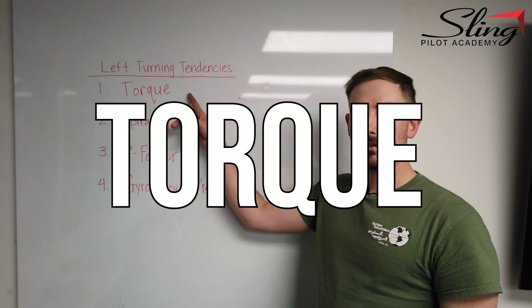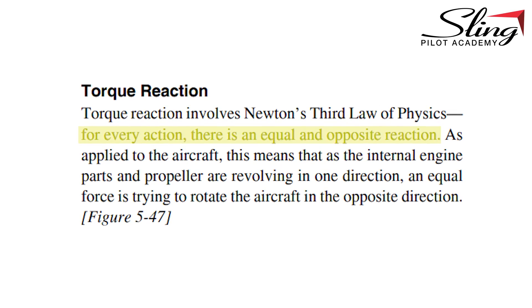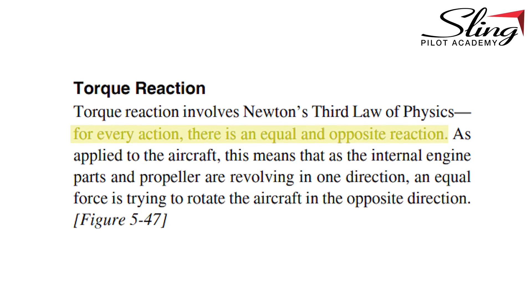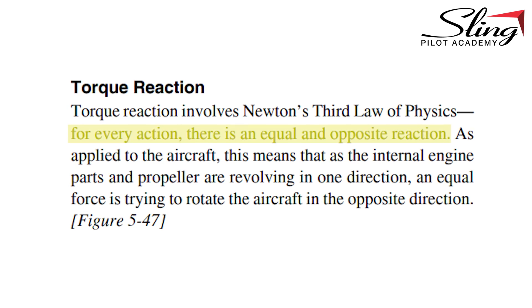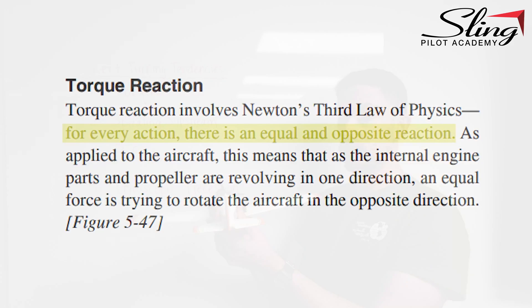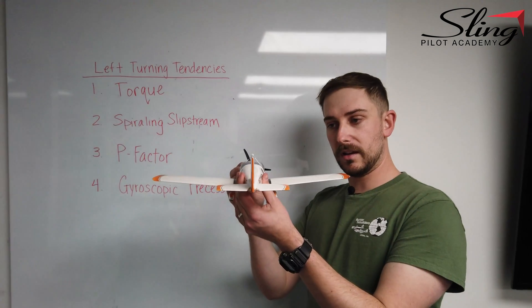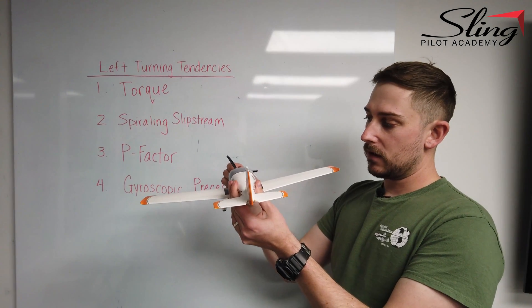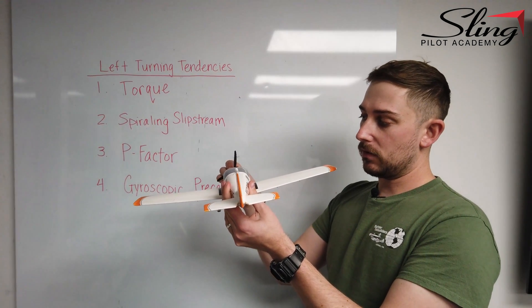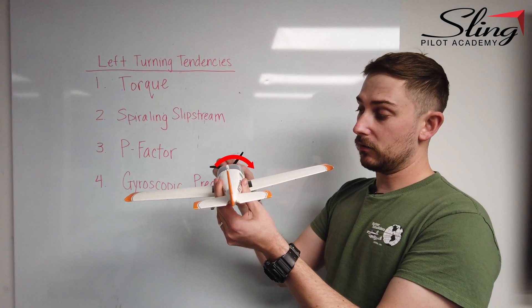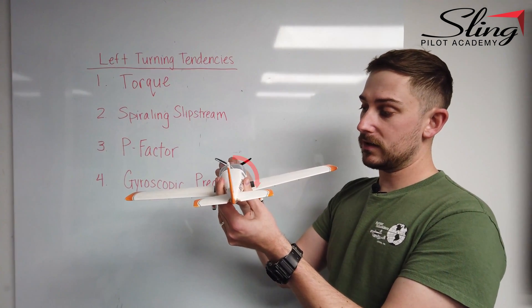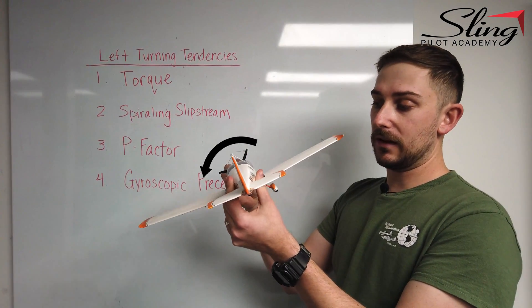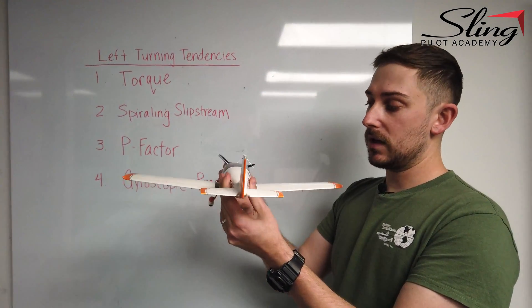Number one is torque. For every force there is an equal and opposite force. So the effect of torque is the opposite of what's happening with the propeller. As you look at it from the pilot's perspective, the blades are turning to the right, which is clockwise, which means the opposite reaction is going to be a left roll.